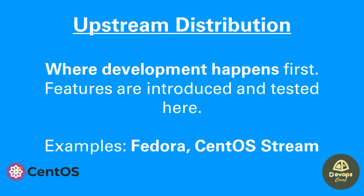Distributions can be classified into two types: upstream and downstream distributions. Upstream distribution is the place where development happens first, before introducing new developments into the main distribution. Fedora and CentOS Stream are examples of upstream distributions.